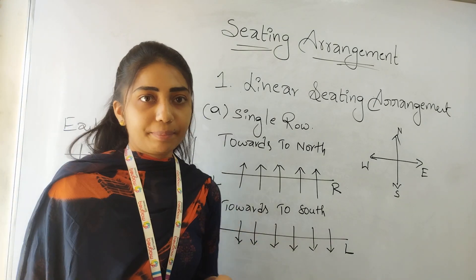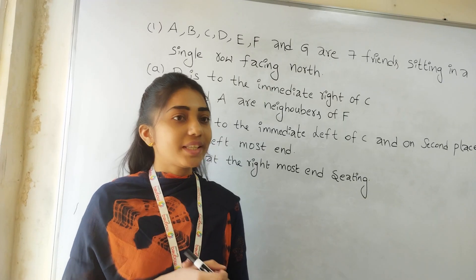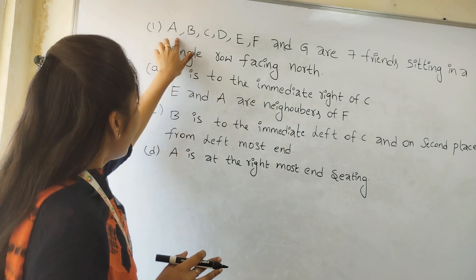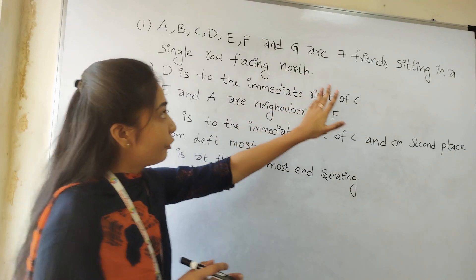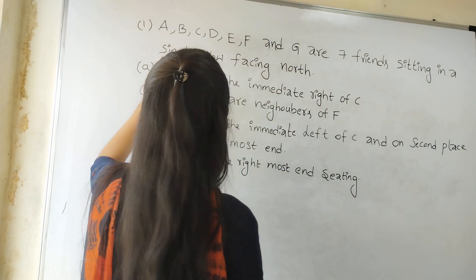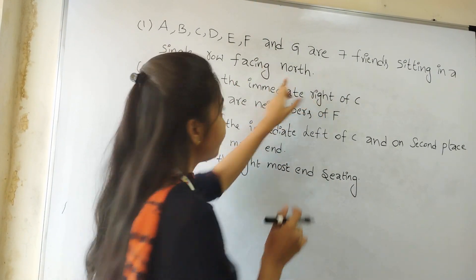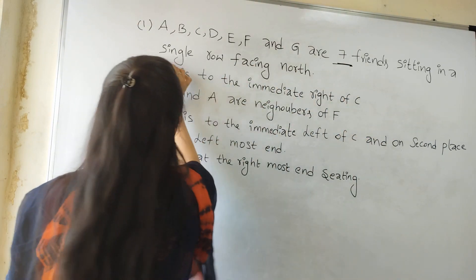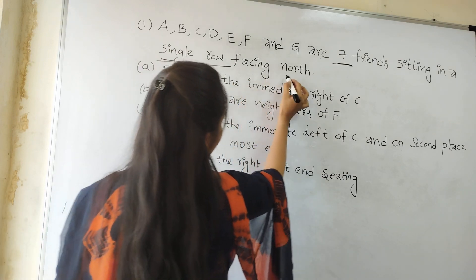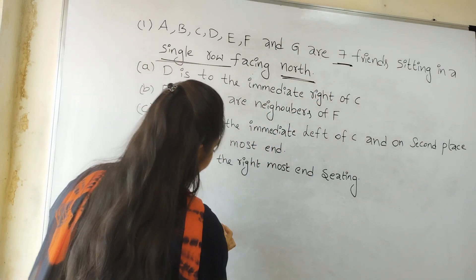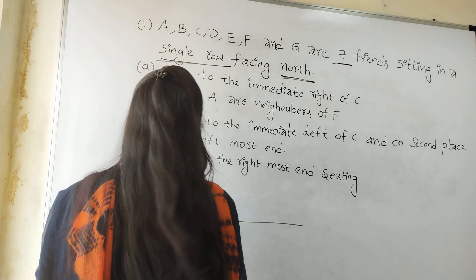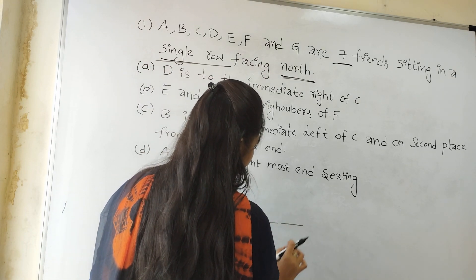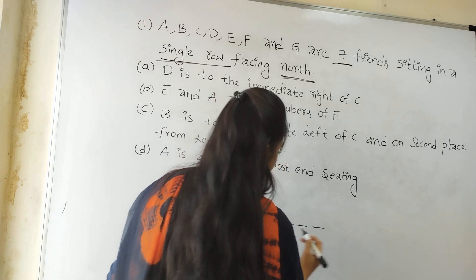Here is one important question on seating arrangement. A, B, C, D, E, F, and G are seven friends sitting in a single row facing North. Seven friends are sitting in a single row facing North direction. So this is the North direction. How many friends? Seven friends — one, two, three, four, five, six, seven friends.